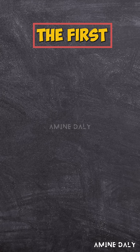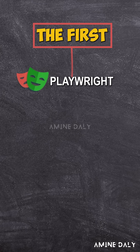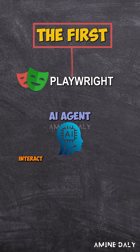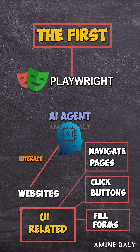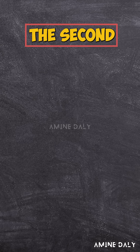The very first one is Playwright. It lets your AI interact with websites the same way a real browser does — navigate pages, click buttons, fill forms, everything UI related, but fully inside MCP.